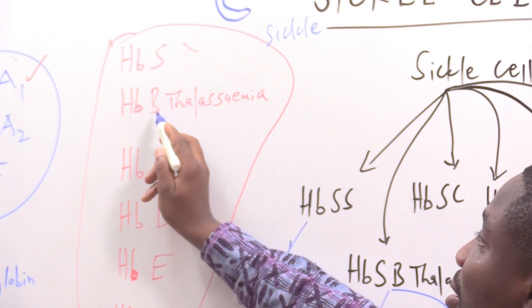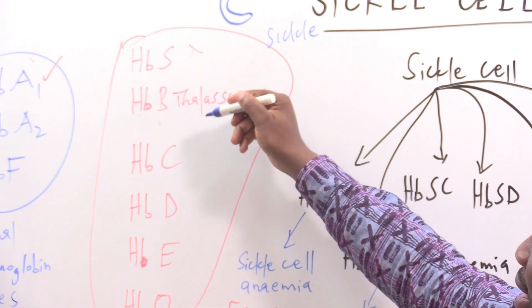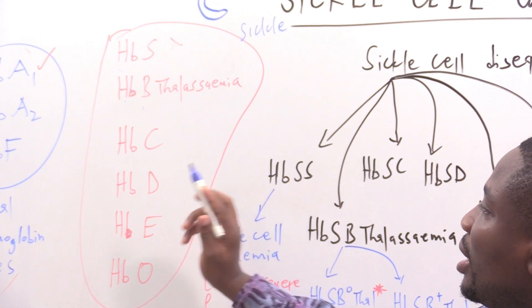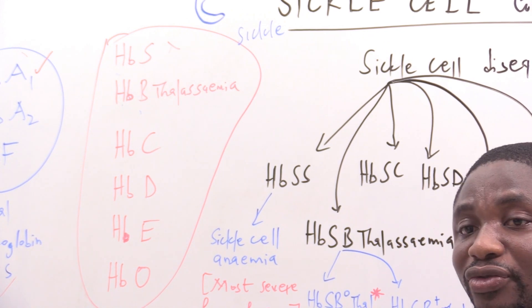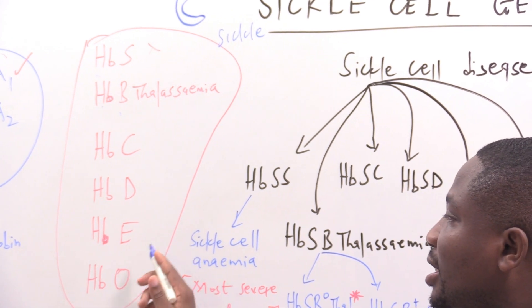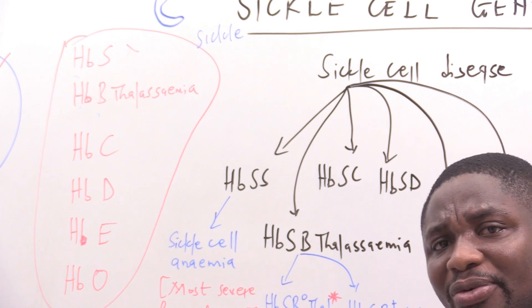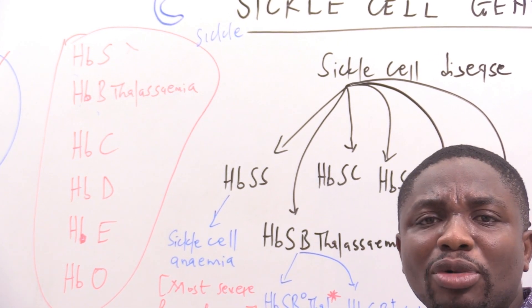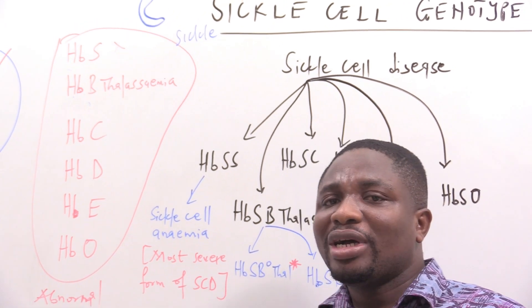We also have HbB beta-thalassemia, which is another gene that codes for abnormal hemoglobin. Then we have HbC, HbD, HbE, and HbO — all genes coding for abnormal hemoglobin.